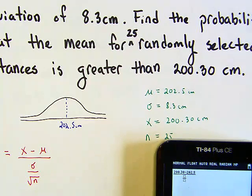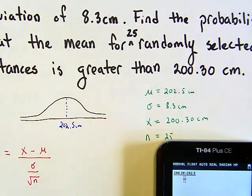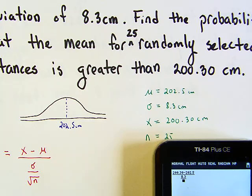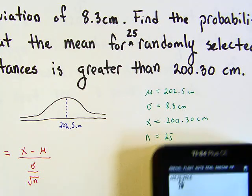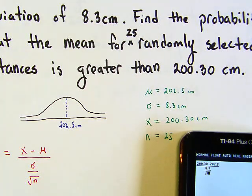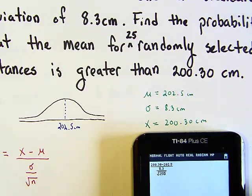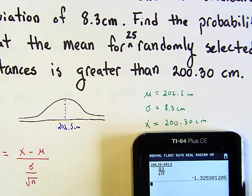On the top I'll put σ, which is 8.3, and on the bottom I'm going to put square root of 25. Well, square root of 25 is 5, and then I'll just hit enter, and that's the value I get.